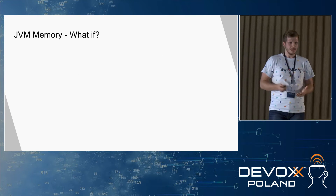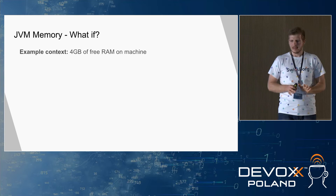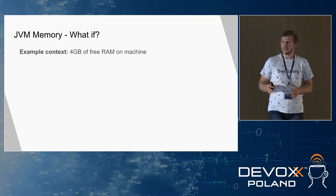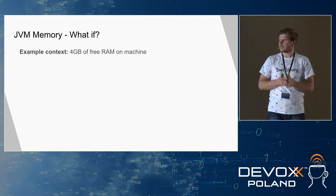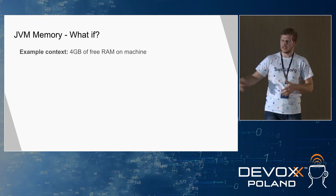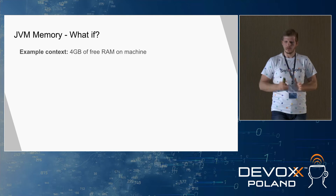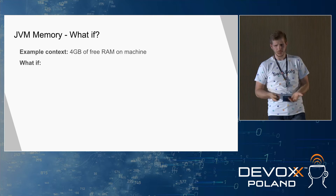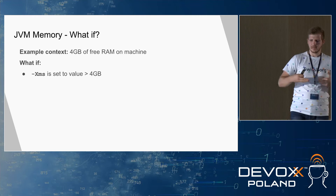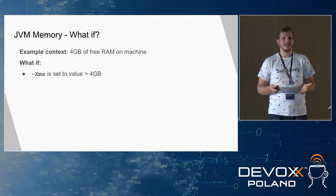The two most important JVM memory parameters are XMS and XMX, which define the initial heap size and the maximum size the heap can grow to. Let's imagine an example: we have 3 GB of free RAM on our machine after subtracting memory taken by the system and other processes. What if XMS — the initial heap space — is set to a value bigger than 4 GB?